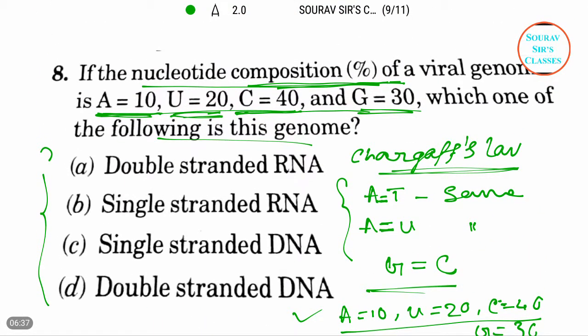So the genome must be single-stranded, and there is the answer. The genome, the answer is option B, that is single-stranded RNA, as it has been given uracil instead of thymine.